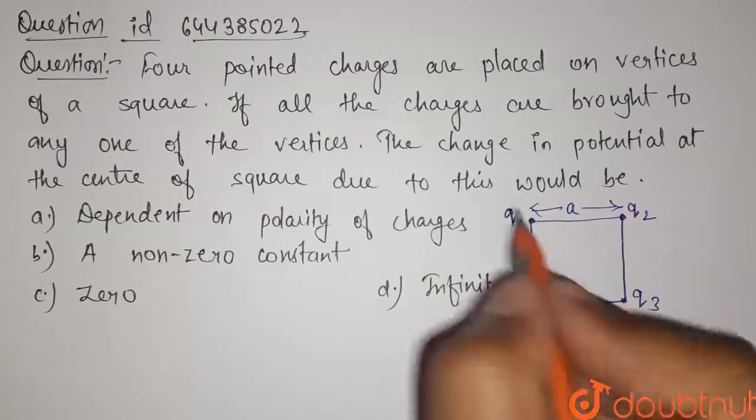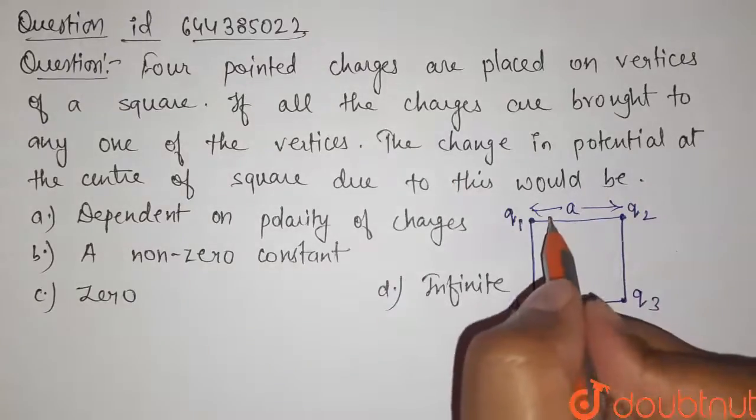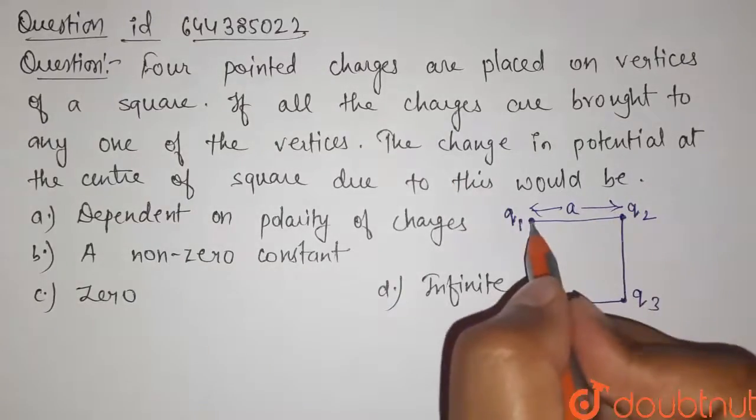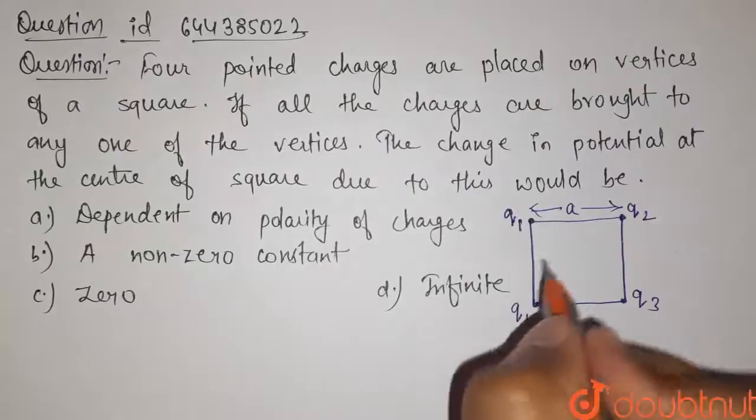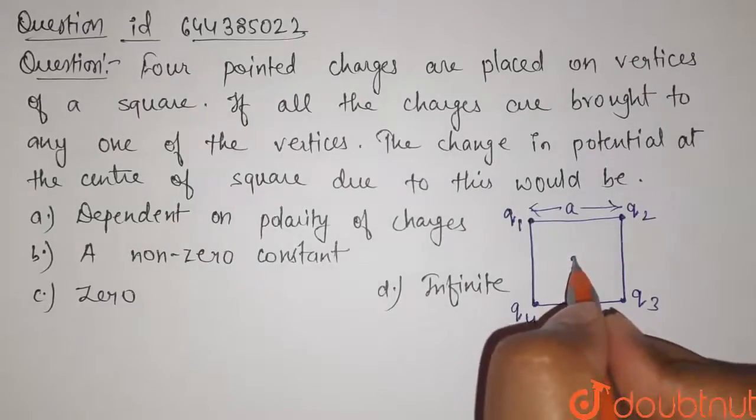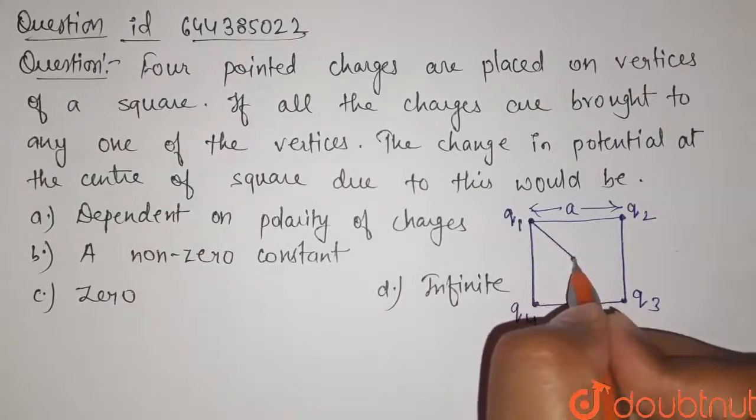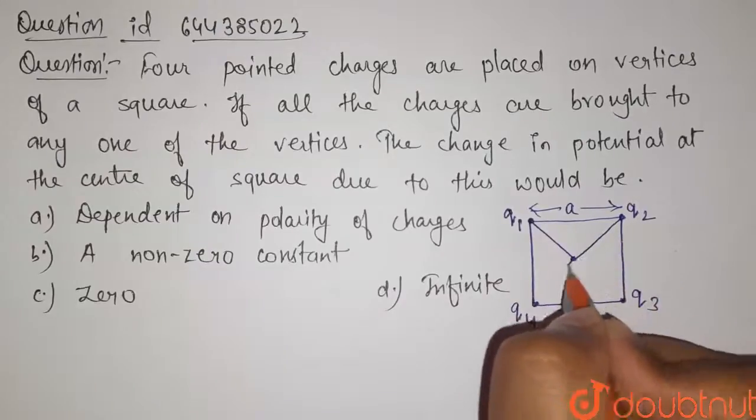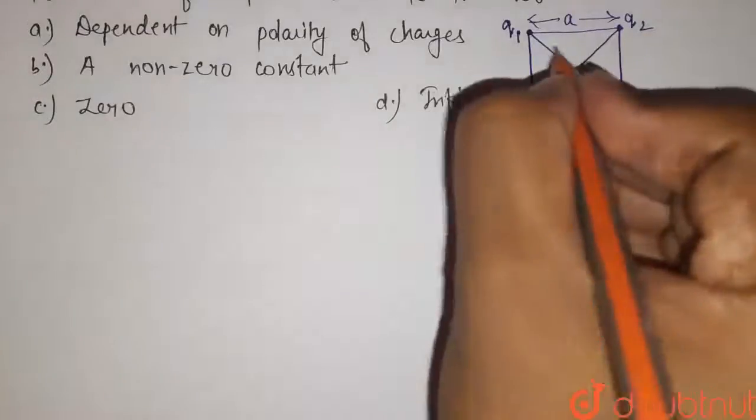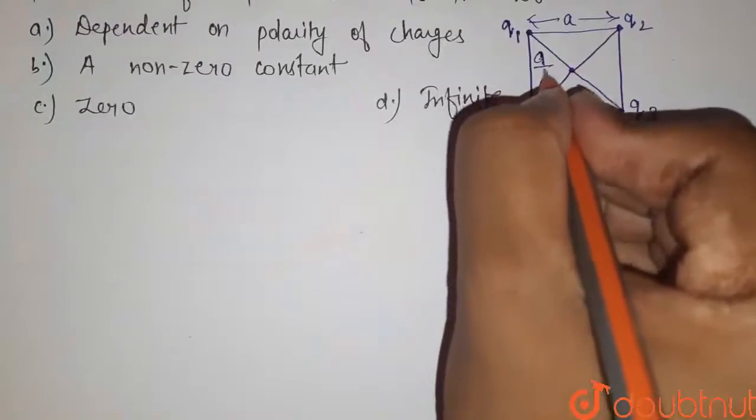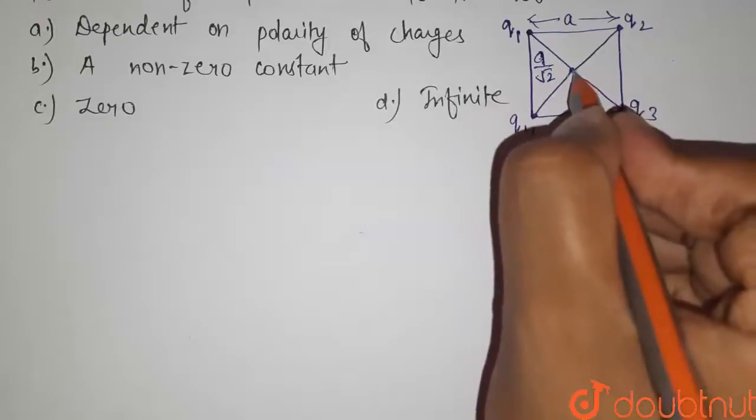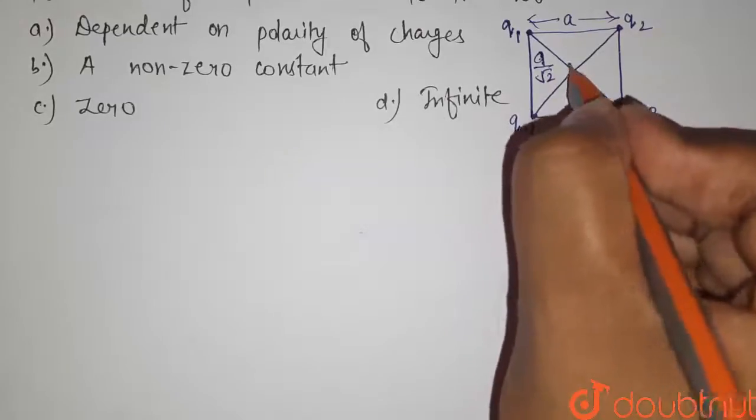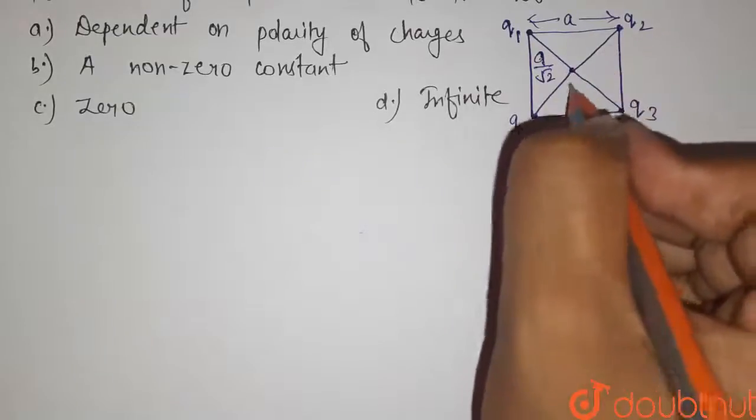Now it is given that when we put these all charges on any one vertices, the change in potential would be. So in first case find the potential at the center due to all these four charges. The distance of charges from the center is equal to a by root 2, and here we can see that the distance of center from all the vertices is same.